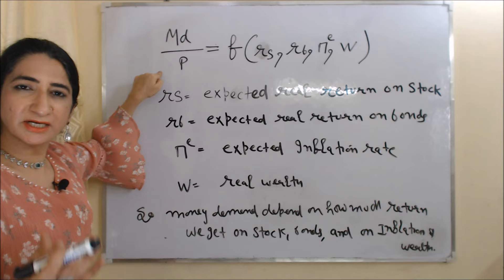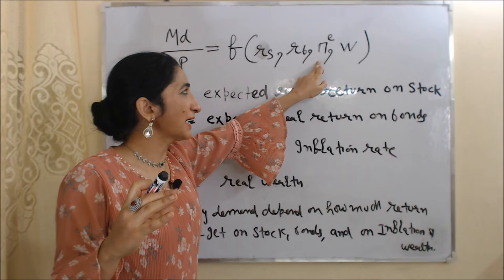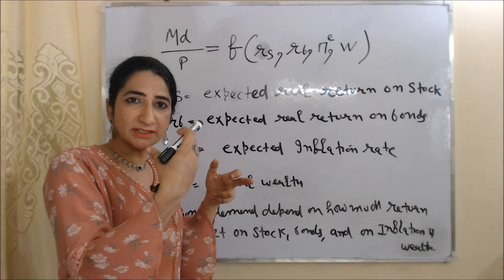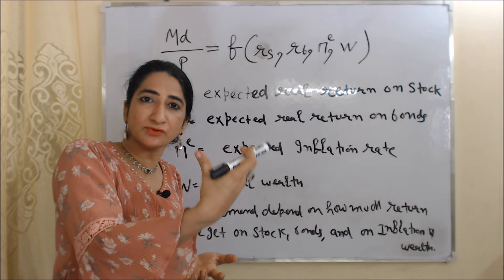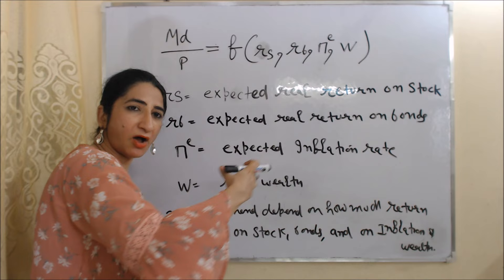Real money demand is a function of RS, RB, Pi_E, and W. Here RS is the expected real return on stocks — how much return we expect when we invest in the stock market. RB is the expected real return on bonds — how much return we expect when we invest in bonds. Pi_E is the expected inflation rate — how much we expect prices will rise in the future.